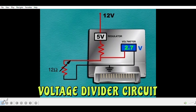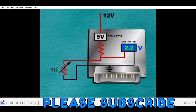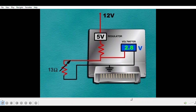A voltage divider circuit uses a sensor that is a variable resistor in series with a fixed resistor located inside the module. As the variable resistance changes, the voltage divides across the two resistors and the module reads the voltage across the sensor. The signal can have a range of values typically between 0 and 5 volts, so it produces an analog DC signal.